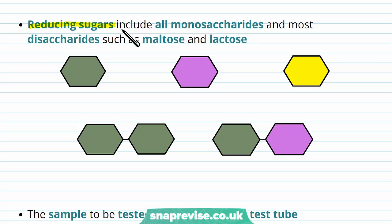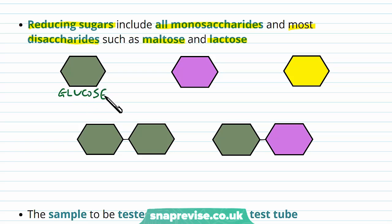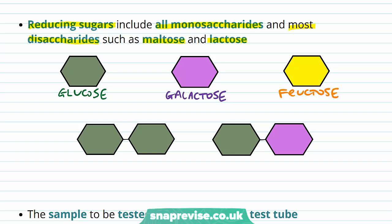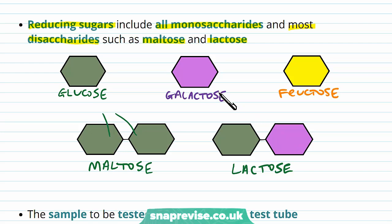Reducing sugars include a variety of carbohydrates. They include all monosaccharides, which are the monomers of carbohydrates, and most disaccharides, for example maltose and lactose. Examples of reducing sugars include glucose, galactose, and fructose — any monosaccharide is a reducing sugar. For disaccharides, we have maltose, which is made of two glucoses, and lactose, which is made up of glucose and galactose.